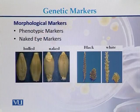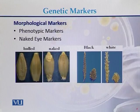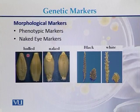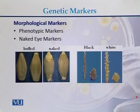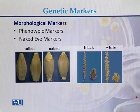Here is an example of morphological markers. Morphological markers can be phenotypic markers — they can be naked eye markers. We can see examples of phenotypic and naked eye markers: we can differentiate between old and naked seeds, and we can differentiate between white and black. If these are the phenotypes either on plants or on animals, we call these morphological markers, and morphological markers are due to the DNA sequence.